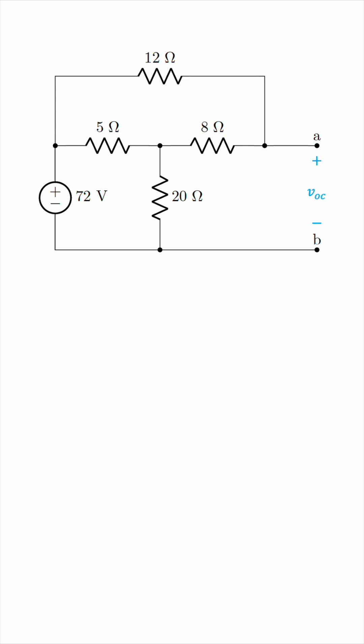We can start by labeling the reference node, which is ground, and then we'll call this node 1, this node 2, and this node 3. And we can immediately note that the open circuit voltage we're trying to find is precisely the voltage at node 3, because there is no voltage drop between node 3 and node A, so they're pretty much the same, and the negative node B is connected to ground, so VOC is precisely V3.